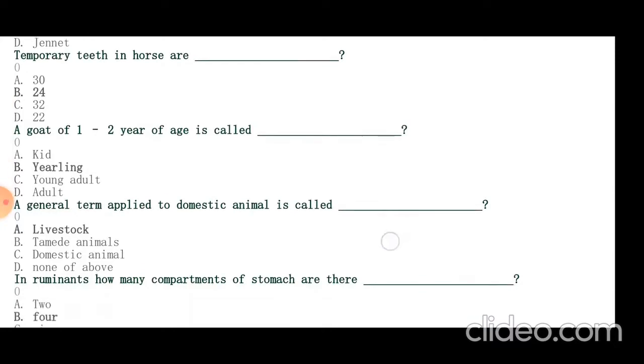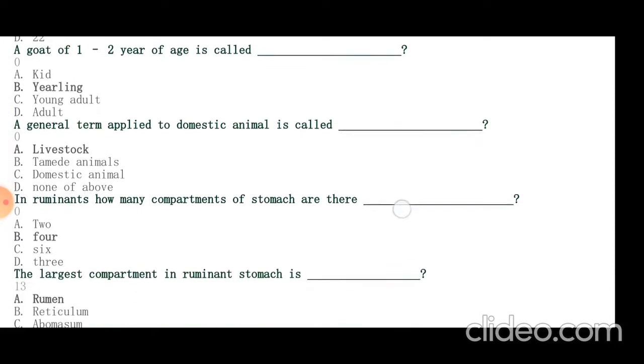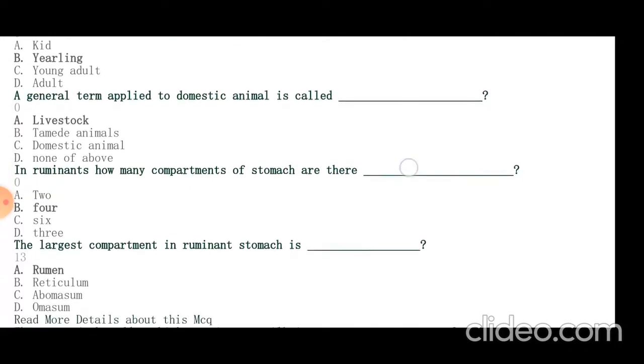In ruminants, there are 4 compartments of stomach. Camel is pseudo-ruminant with 3 compartments. The largest compartment of ruminant stomach is rumen.